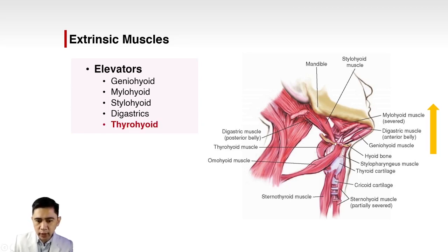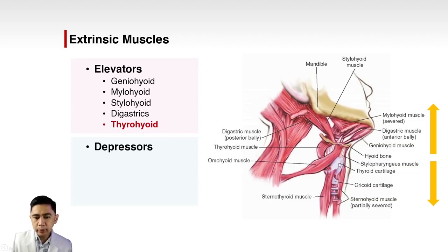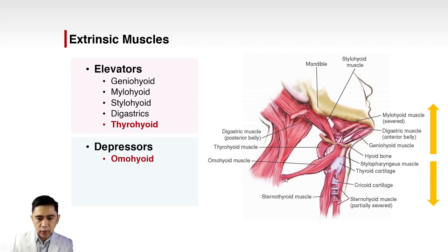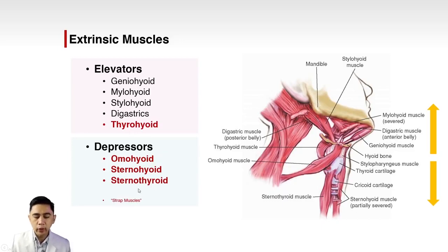Depressors move the laryngeal complex inferiorly. These include the omohyoid, which goes to the scapula; the sternohyoid, from the sternum to the hyoid; and the sternothyroid, from the sternum to the thyroid. The thyrohyoid, omohyoid, sternohyoid, and sternothyroid are collectively called the strap muscles, which cover the laryngeal complex in the neck just beneath the skin and platysma.